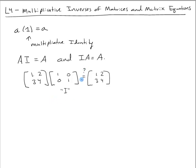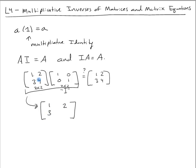Let's multiply [1,2,3,4] times the identity matrix and verify A × I = A. We have a two-by-two times two-by-two, so the result is two-by-two. Computing: 1×1 + 2×0 = 1, 1×0 + 2×1 = 2, 3×1 + 4×0 = 3, and 3×0 + 4×1 = 4. We get [1,2,3,4] back, so this is a true statement.